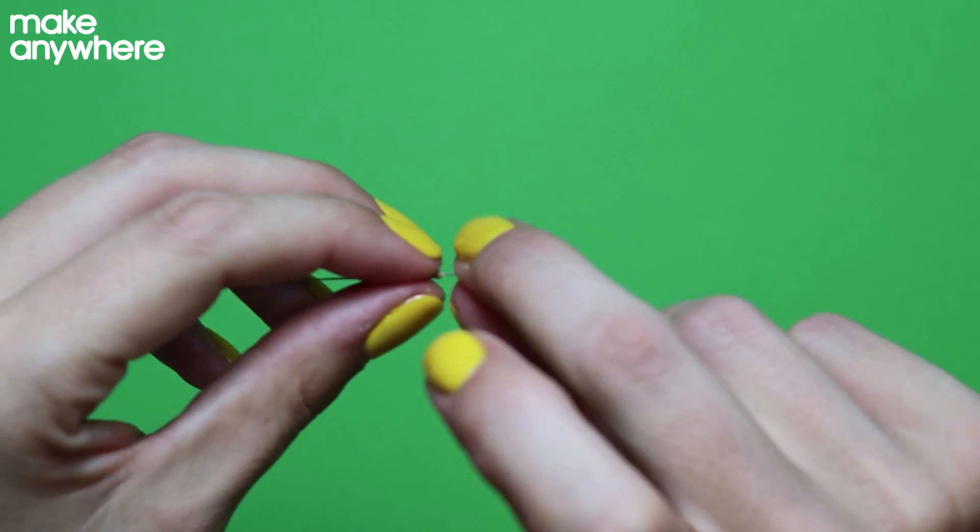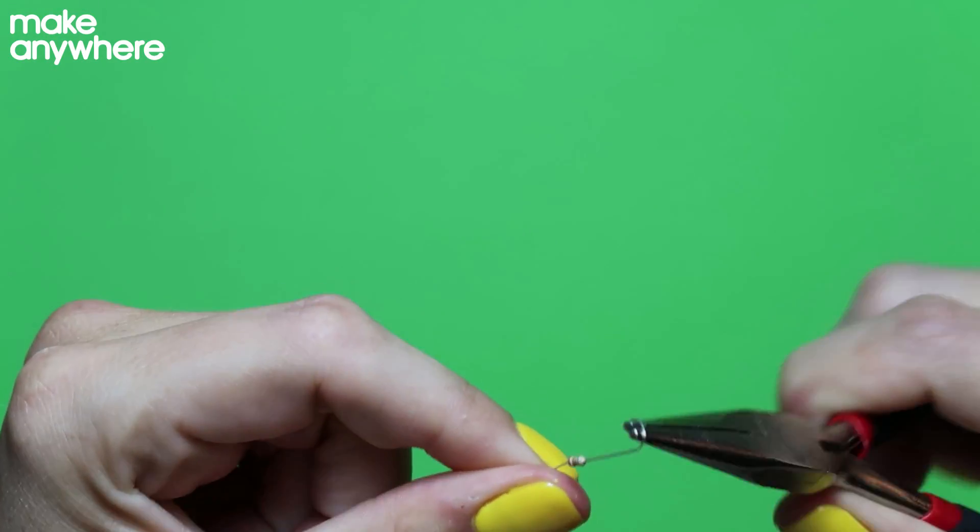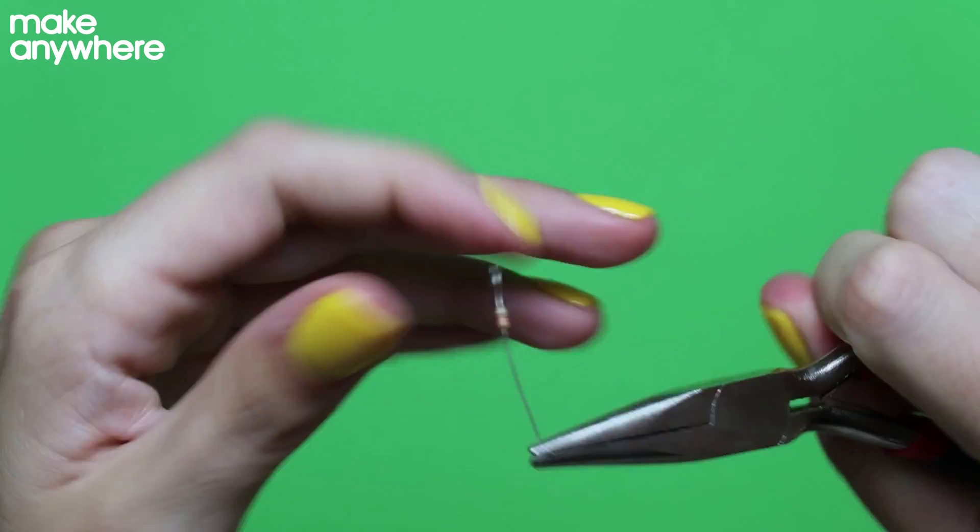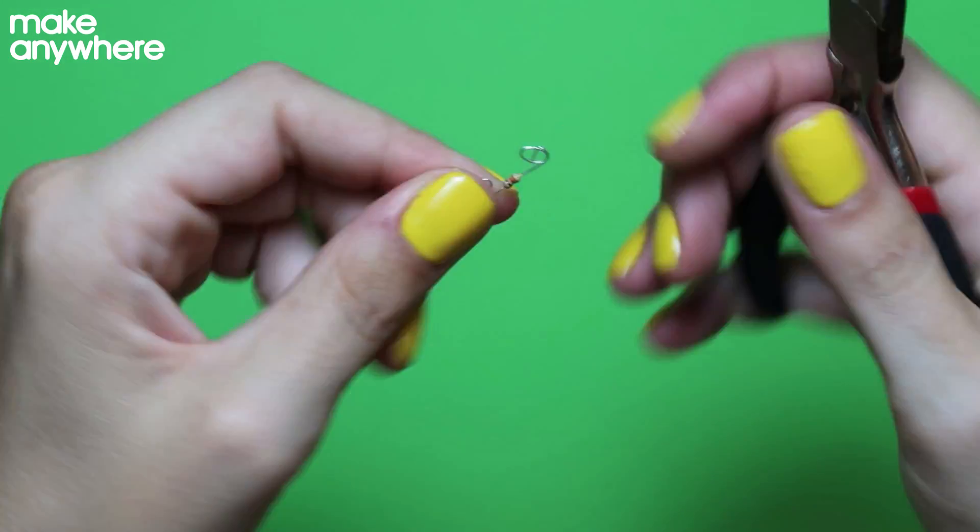Let's do our resistor. Because resistors don't have polarity, it doesn't matter which way they go in your circuit, we're just going to curl the legs, both of the legs.